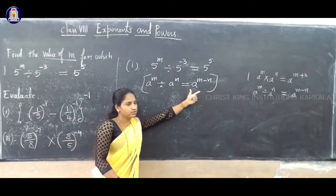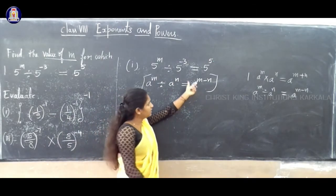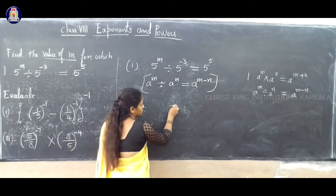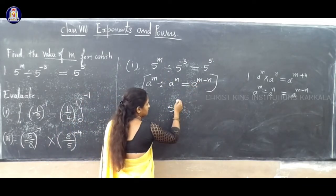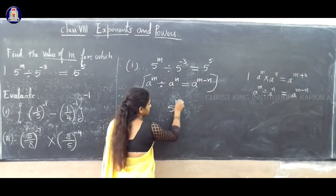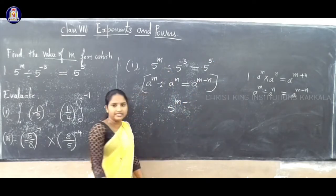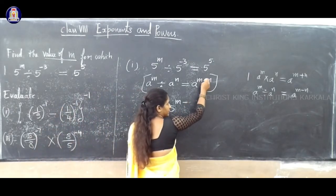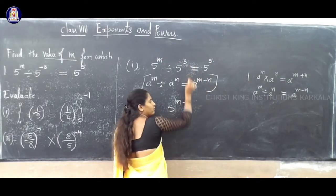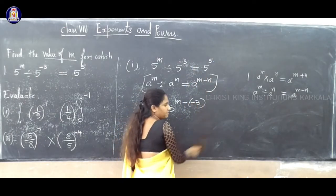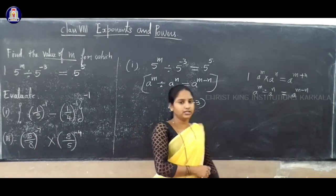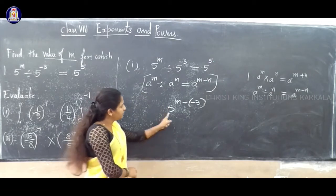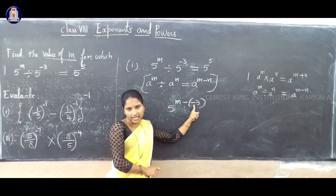The question is in this form, so you must write the answer in A power m minus n form. A is 5. So 5 power n means n is n, and the second power is minus of minus 3. Why minus of minus 3? Because in the form of that law, it is given minus, but the value of n is minus 3, so write it inside the bracket.